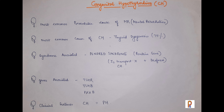The most common cause of congenital hypothyroidism is thyroid dysgenesis, occurring in 75% of children. A syndrome associated with congenital hypothyroidism is Pendred syndrome, which occurs due to mutation in the pendrin gene, causing an error in iodine transport leading to congenital hypothyroidism along with deafness. Genes commonly associated include TSHR, TSHB, and PAX8.